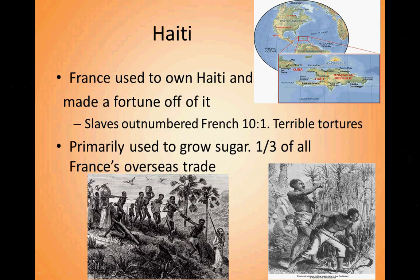The first revolution we're going to cover is Haiti — a little island, actually half an island, sharing Hispaniola with the Dominican Republic. France used to own Haiti and made a fortune off it — one-third of all their overseas trade, primarily sugar. Haiti was largely worked by African slave labor after native populations were mostly killed off and overworked through slavery and terrible conditions.